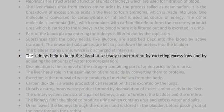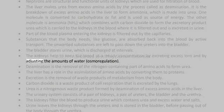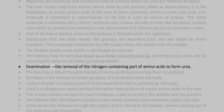The kidneys help to keep the blood at a steady concentration by excreting excess ions and by adjusting the amounts of water — osmoregulation. Deamination is the removal of the nitrogen-containing part of amino acids to form urea.